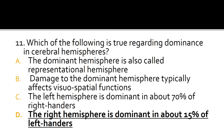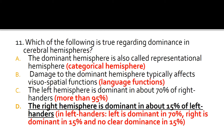The correct answer is D: the right hemisphere is dominant in about 15% of left-handers. A is false because the dominant hemisphere is also called the categorical hemisphere. Damage to the dominant hemisphere typically affects language functions, while damage to the non-dominant hemisphere affects visuospatial functions. C is false because the left hemisphere is dominant in more than 95% of right-handers. In left-handers, the left hemisphere is dominant in 70%, the right in 15%, and there is no clear dominance in about 15%.